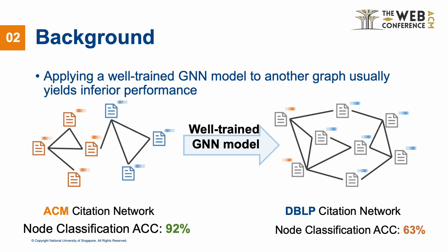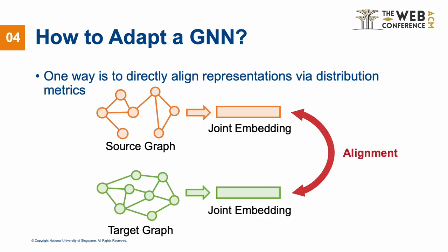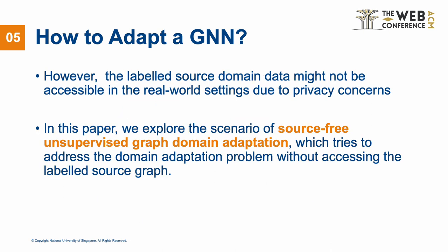However, GNN models trained on source domains typically experience significant performance degradation when directly deployed to target domains due to the issue of domain discrepancies. Graph-structured data leads to non-trivial challenges for domain adaptation tasks because of its non-IID properties in an unsupervised setting. One research line is to explicitly minimize the source and target representation's distribution discrepancies. However, the labeled source domain data might not be accessible in real-world settings due to privacy concerns.